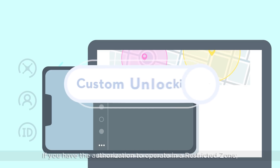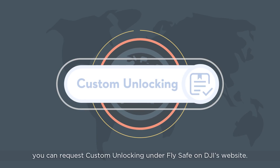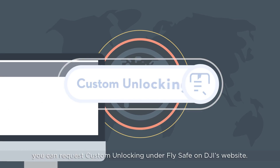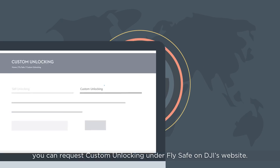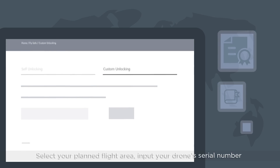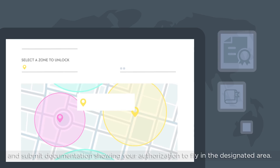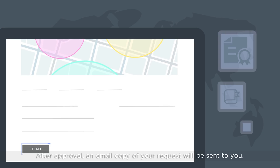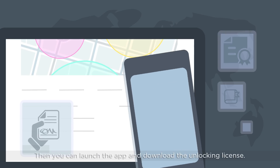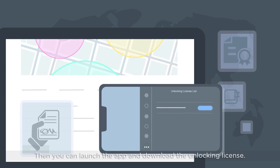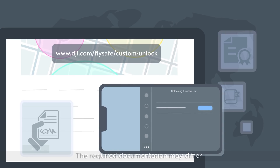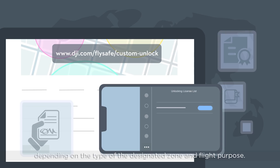If you have the authorization to operate in a restricted zone, you can request custom unlocking under FlySafe on DJI's website. Select your planned flight area, input your drone's serial number, and submit documentation showing your authorization to fly in the designated area. After approval, an email copy of your request will be sent to you. Then you can launch the app and download the unlocking license. The required documentation may differ depending on the type of the designated zone and flight purpose.